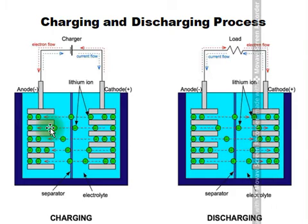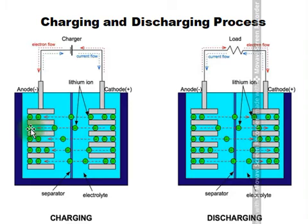When charged ions and electrons are absorbed and held inside the structure of the host material without disturbing it, the process is called intercalation. The lithium ions and electrons intercalate and are placed within the anode structure.